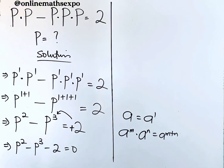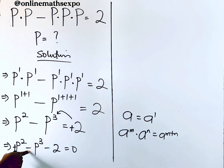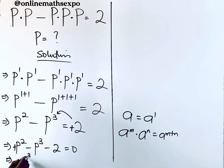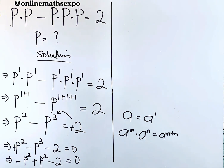After rearranging: p² carries positive, p³ carries negative, and 2 is negative. So we have negative p³ plus p² minus 2 equals zero.